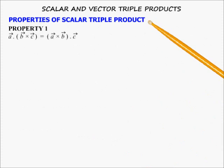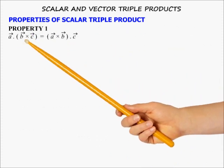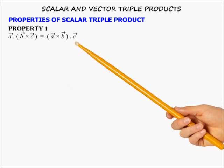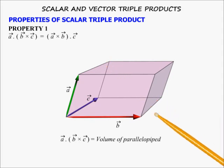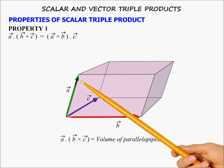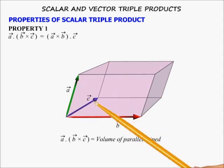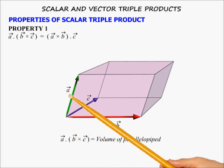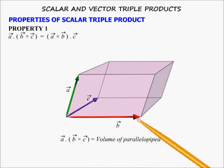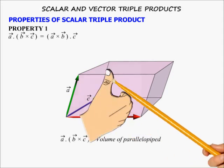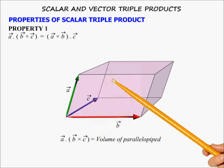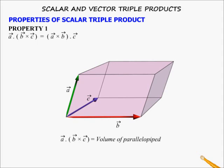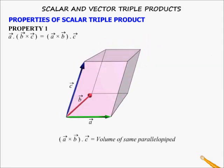Property 1: If the operators — i.e. dot and cross — are interchanged, the scalar triple product remains unchanged. In the 3D model, the green arrow is vector A, red arrow is vector B, and blue arrow is vector C. In A dot (B cross C), the three vectors form a right-handed system where A lies above the plane containing B and C, suggested by the right-hand thumb curling from B to C. Rotating the model shows that (A cross B) dot C also forms a right-handed system and its magnitude is the volume of the same parallelepiped.